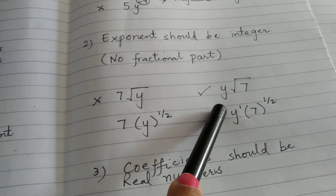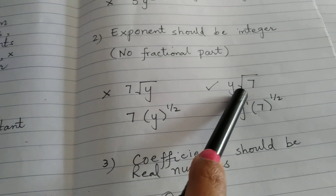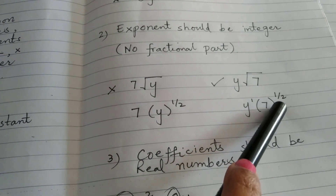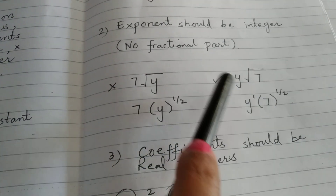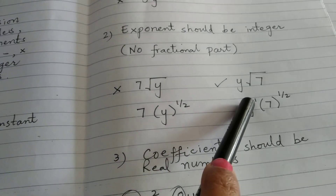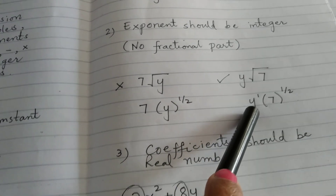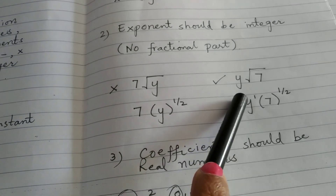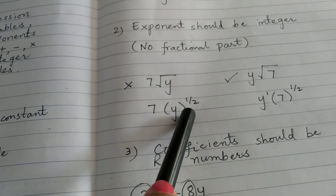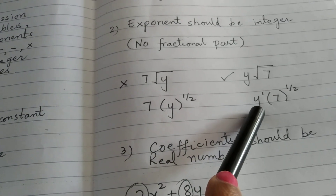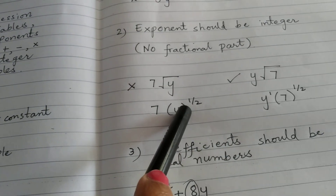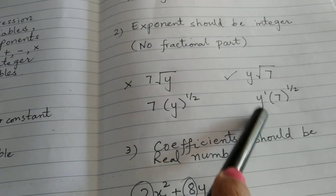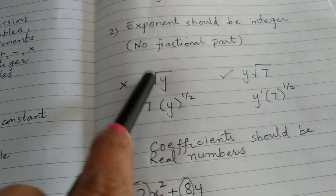Now if we look at y times the square root of 7, the square root applies to 7 — which is the coefficient — and we write it as 7 to the power 1/2. But if we check the exponent of the variable y, it has power 1, which is simply 1 — not a fraction. So this is a polynomial expression.